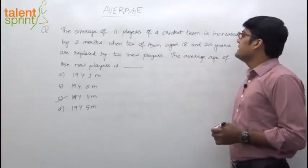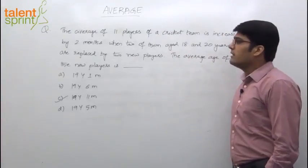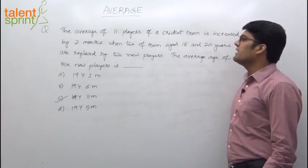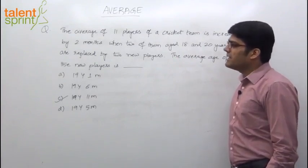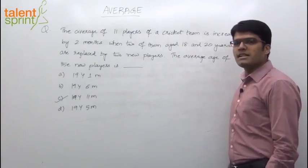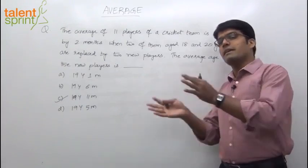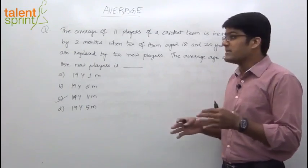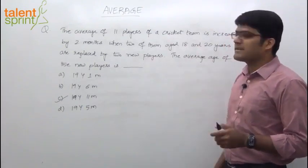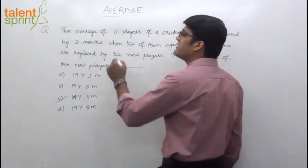The average of 11 players of a cricket team is increased by 2 months when 2 of them aged 18 and 20 years are replaced by 2 new players. So basically what happens here, 2 players are going out of the team and they are replaced by 2 other players. And in this process, the average of 11 players of the cricket team is increased by 2 months.